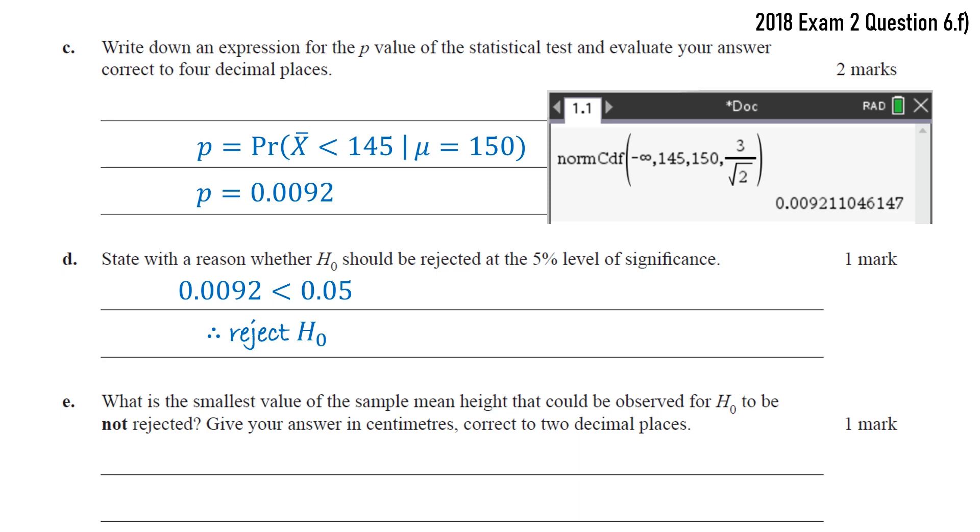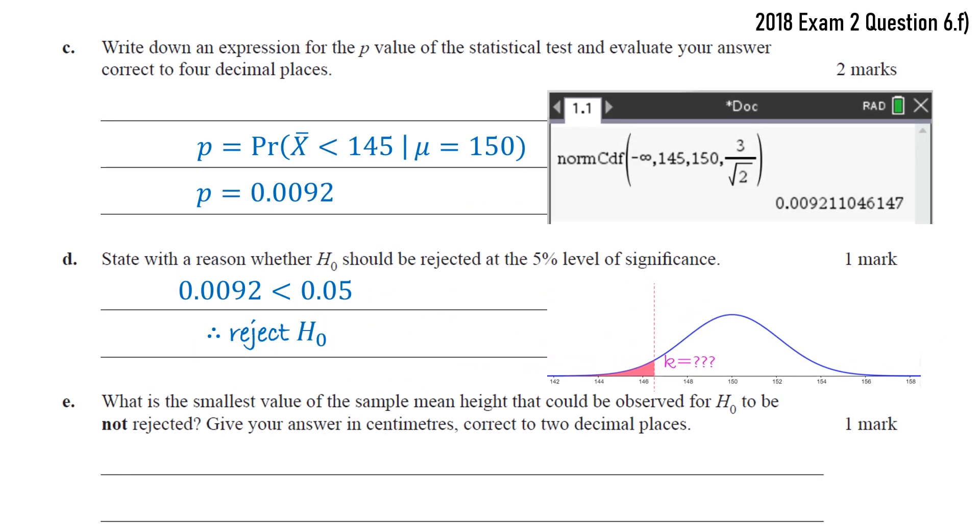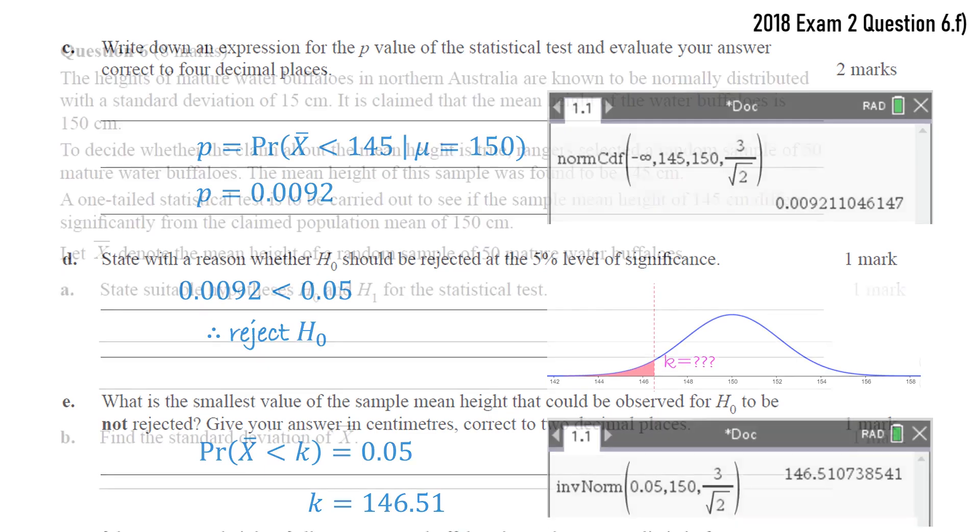Part E is where it gets a little interesting, so we want the smallest value of the sample mean height that could be observed for H0 to be not rejected. We definitely need a diagram here. So the rejection region is the 5% on the left of that graph. We do not want to be in there because we do not want to reject, so we need to be just on the right-hand border where I've called k there. In order to find that k-value, we can use an inverse normal, and again we can do that on the CAS calculator. So we can find that k-value to be 146.51.